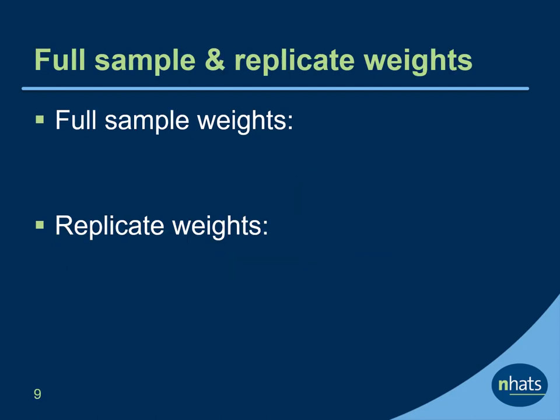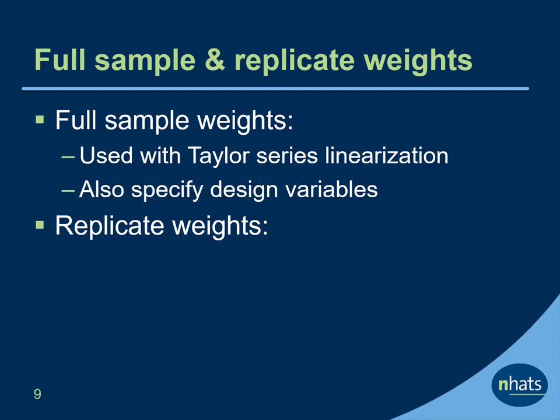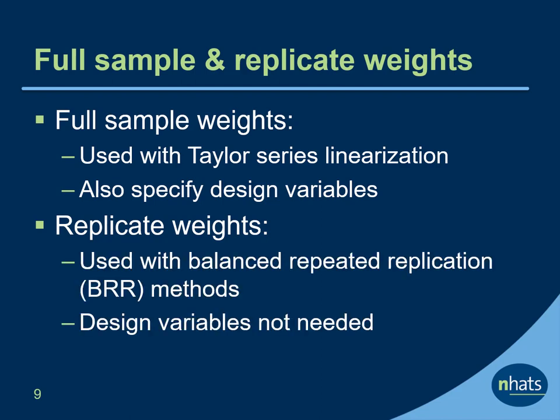For each type of NHATS weight, two types have been produced: full sample weights and replicate weights. When Taylor series linearization estimation models are used, the full sample weights should be specified together with survey design variables. When replication methods such as the balanced repeated replication method are used, the replicate weights are specified. Note that the sample design variables are not needed with replicate methods.